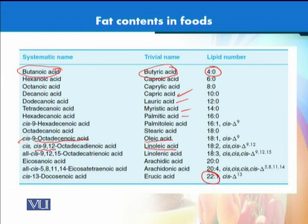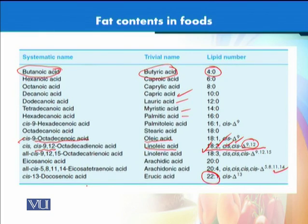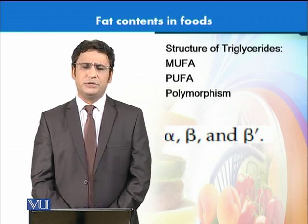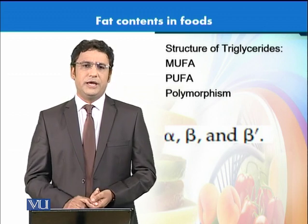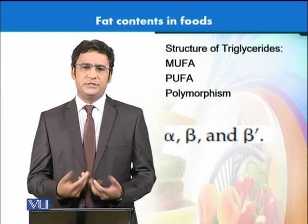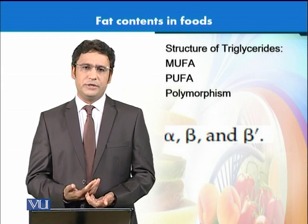This is how we write the notation of fatty acids — for example, an 18-carbon molecule with two double bonds in cis-cis configuration at positions 9 and 12 of the carbon chain. These can be referred to by their trivial names or systematic names. Regarding triglyceride structure, a monounsaturated fatty acid has a single double bond, while polyunsaturated fatty acids have more than one double bond. The greater the unsaturation, the healthier the oil is considered to be.